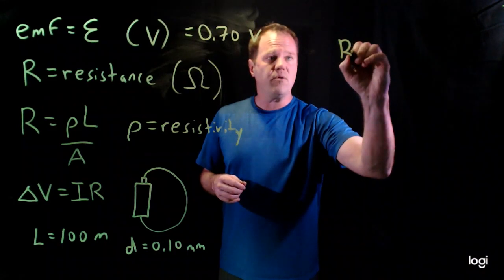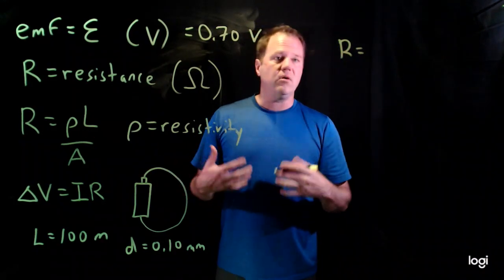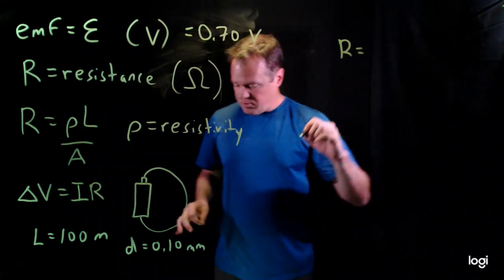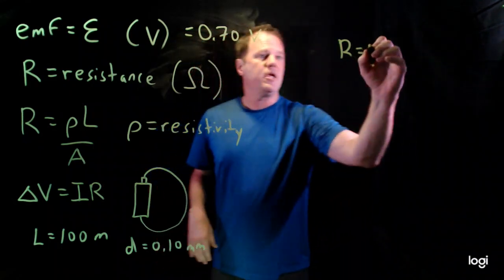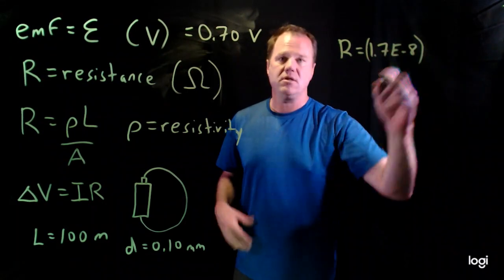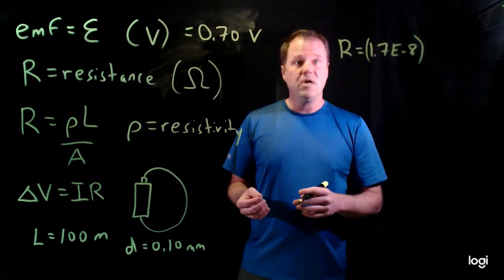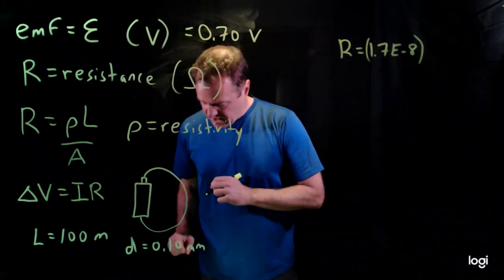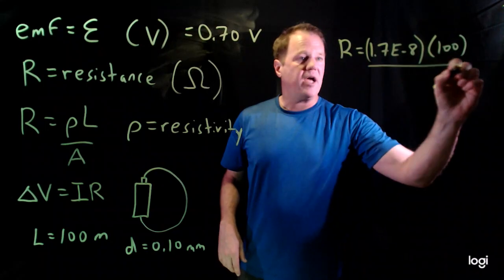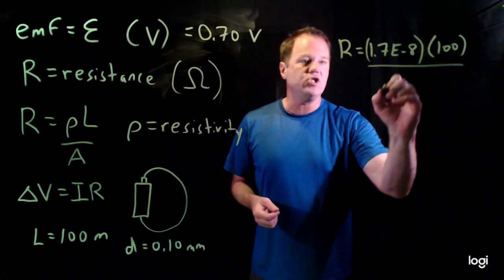So resistance will be, I don't really need to do any algebra here. Just chuck in numbers. I could look up the resistivity of copper. It's 1.7 times 10 to the minus 8 ohm meters. That's considered a property of the material, the resistivity. And then the length is a hundred meters. And then I divide by the cross sectional area. I got to do a little bit of geometry here,